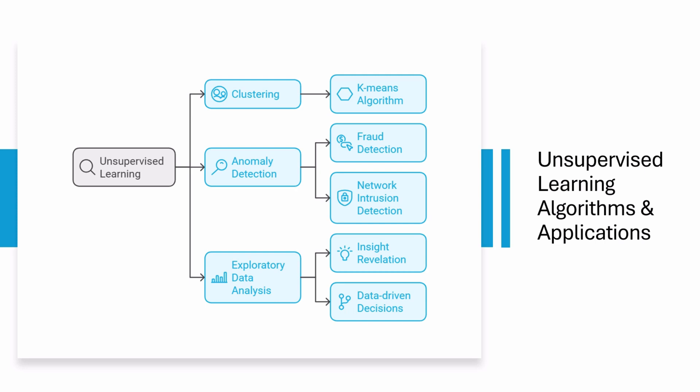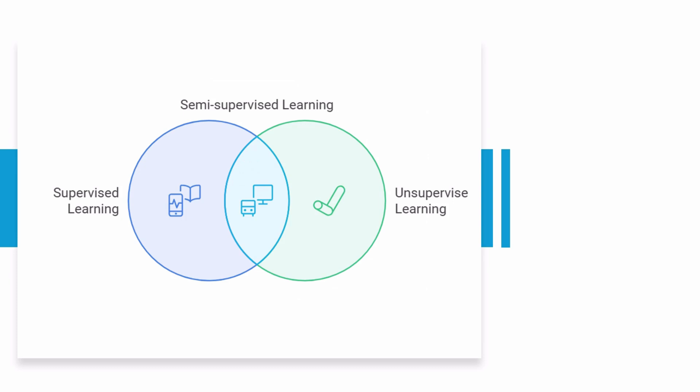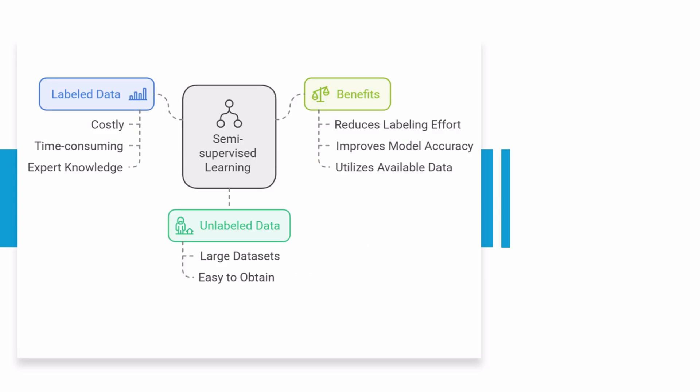Unsupervised learning excels in exploratory data analysis, revealing insights that may not be immediately apparent and enabling organizations to make data-driven decisions. Now let's discuss semi-supervised learning. This approach combines the strengths of both supervised and unsupervised learning. The algorithm is trained on a small amount of labeled data alongside a much larger set of unlabeled data.